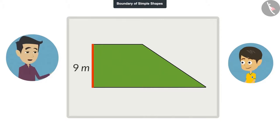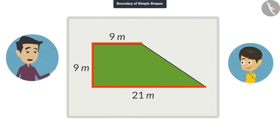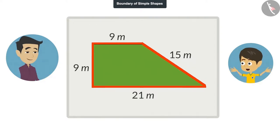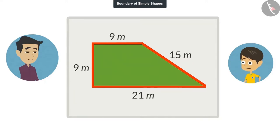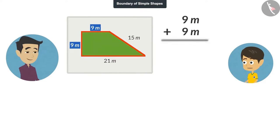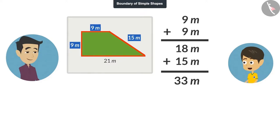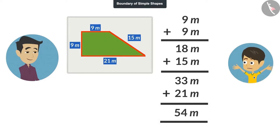The length of this line is 9 meters. The length of this line is also 9 meters. The length of the bottom line is 21 meters, and the length of this slanting line is 15 meters. Now I know the length of all the lines. By adding these I will get the length of the field's boundary. 9 plus 9 is 18 meters. 18 plus 15 is 33 meters. And 33 plus 21 is 54 meters. That means the boundary of this field is 54 meters.